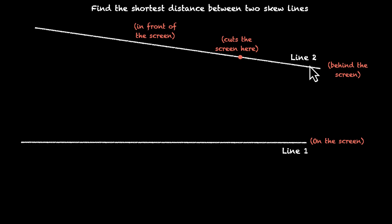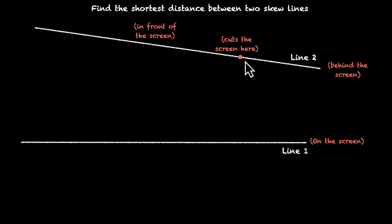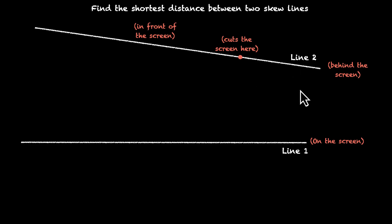So this is line 2. Now think about these two lines — they will never intersect, because line 1 stays in this plane and line 2 only cuts this plane at one point. So they're not intersecting. They're also not parallel: line 1 is moving in one direction whereas line 2 is going in some other direction. So they're neither parallel nor intersecting — these two are called skew lines.